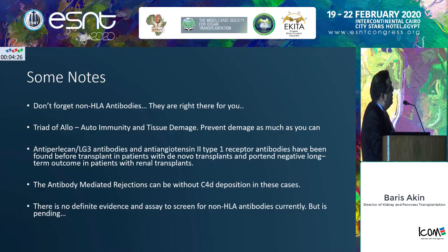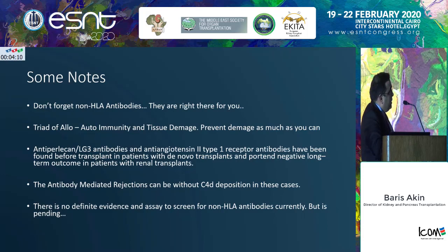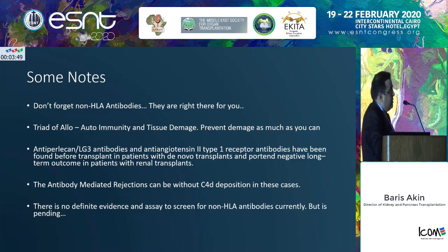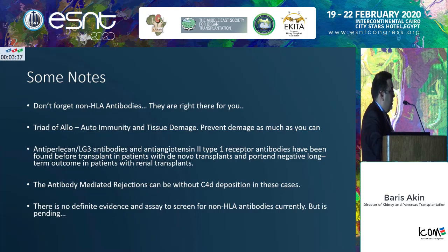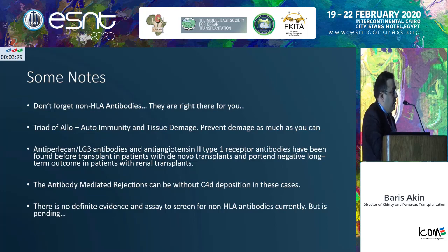In conclusion, we shouldn't forget that we have non-HLA antibodies, and we should always consider alloimmunity alongside HLA — tissue damage is an important part of it. From all these non-HLA antibodies, anti-perlican LG3 antibodies and angiotensin 2 type 1 receptor antibodies are the most important ones, with clinical data showing they may have significance in graft outcome. Sometimes you may have humoral rejection due to non-HLA antibodies even without C4d deposition, making it clinically challenging. Right now there is no definitive evidence to mandate screening for non-HLA antibodies, but it is hopefully pending.